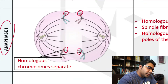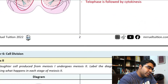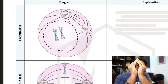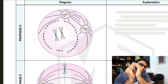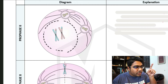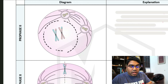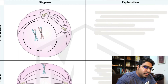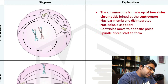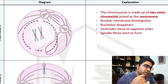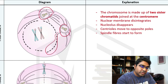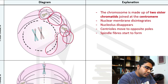After telophase 1, cytokinesis occurs, and then we go on to meiosis 2. From meiosis 1, the single parent cell has become two daughter cells, and each of the daughter cells will undergo meiosis 2. Let's begin with prophase 2. The chromosome is still made up of two sister chromatids joined at the centromere. The nuclear membrane disintegrates, nucleolus disappears, and centrioles start to move to the opposite poles as spindle fibers begin to form.